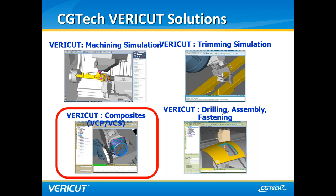VCP and VCS offer a suite of tools for design, manufacturing, and quality engineers. The software is completely machine-independent, and CG Tech has success working with programs from a number of machine vendors, including equipment from Electro-Impact, M-Torres, KUKA, Accudyne, Thieves, Automated Dynamics, and more.